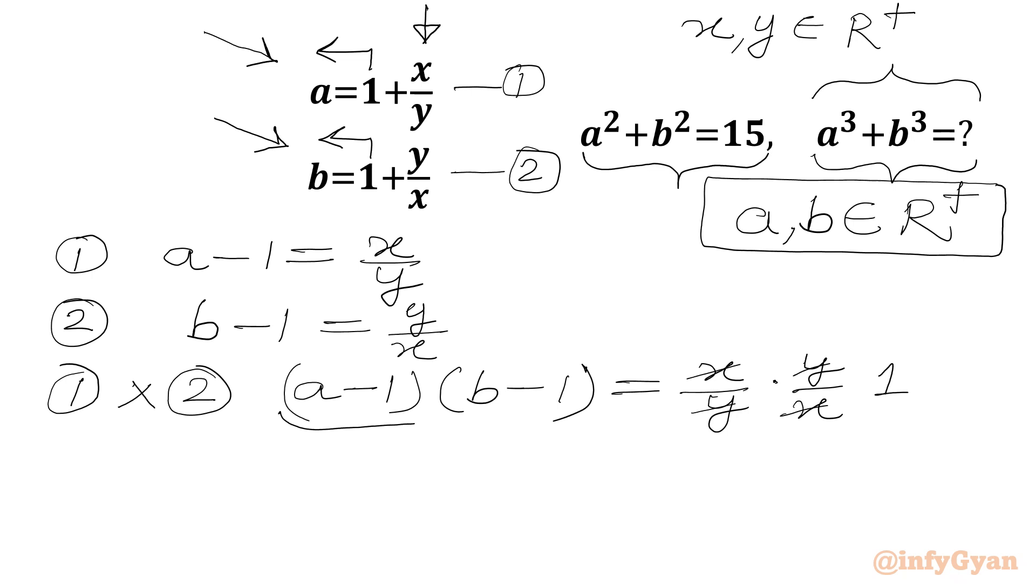Now we have to expand or multiply these two brackets. We will get ab minus a minus b plus 1 equals 1.